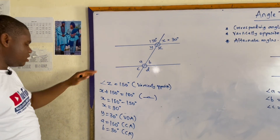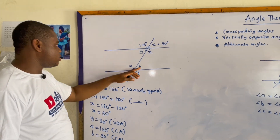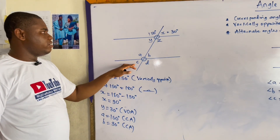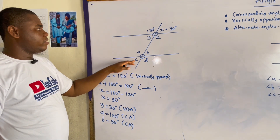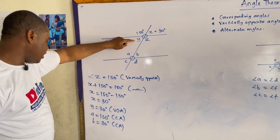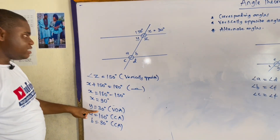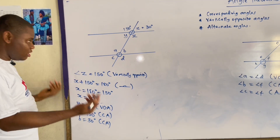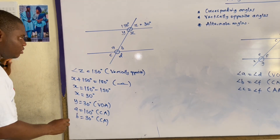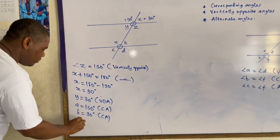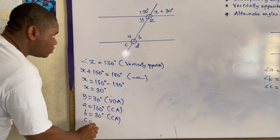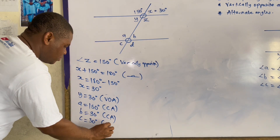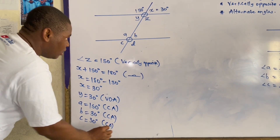So we have gotten A and B. You can also get C from Y — because if Y is 30 degrees, that means C is also 30 degrees, corresponding angle. So C equals 30 degrees.